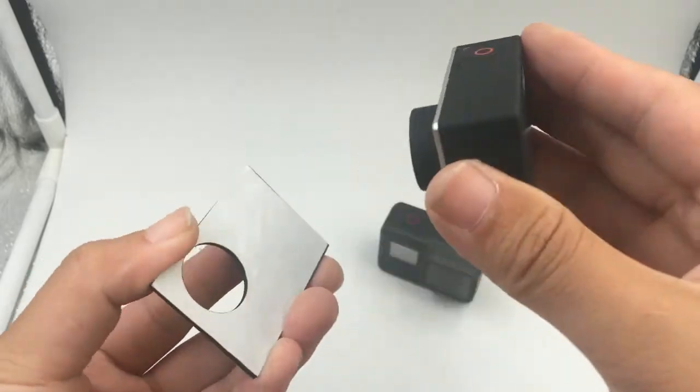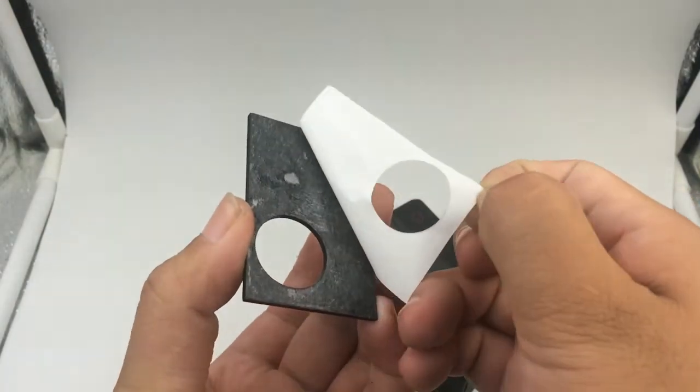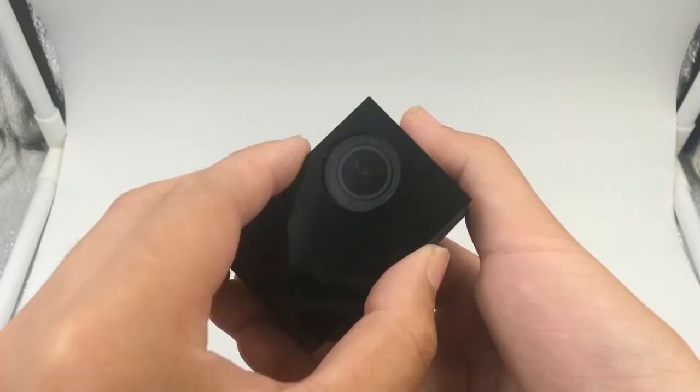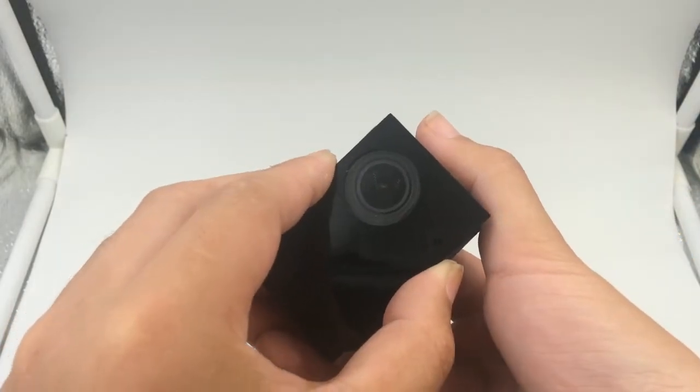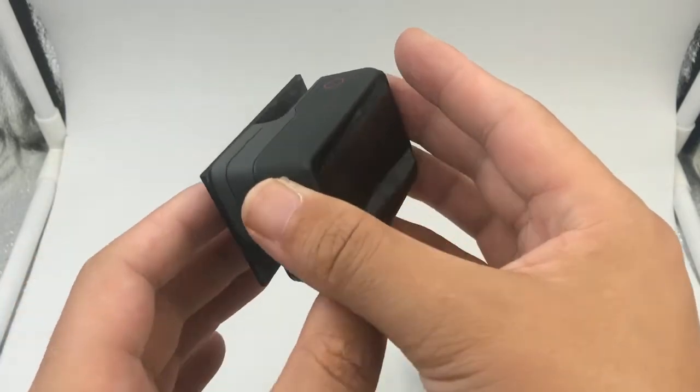This camera cover not only used for GoPro Hero 4, but also one side got a double adhesive tape. You can align the glue to the newest GoPro Hero 5 black. So it's multifunctional.